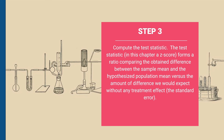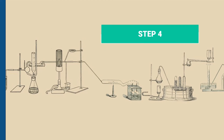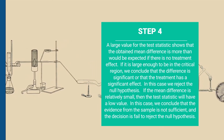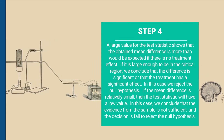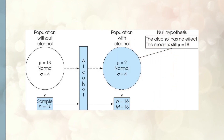Step 2 — locate the critical region: the critical region consists of outcomes very unlikely to occur if the null hypothesis is true, defined by sample means almost impossible to obtain if the treatment has no effect. These samples have a probability less than the alpha level. The middle 95% represents high probability values if the null hypothesis is true; the extreme 5% is the critical region. Step 3 — compute the test statistic: a z-score forms a ratio comparing the obtained difference between the sample mean and the hypothesized population mean versus the standard error. Step 4 — make a decision: if the test statistic falls in the critical region, reject the null hypothesis; otherwise, fail to reject it.